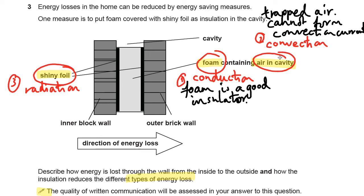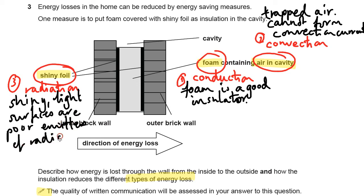And then lastly, let's talk about radiation. Well you should remember that shiny light surfaces are poor emitters and absorbers of radiation. Poor emitters is the better word this time. Remember radiation is infrared IR.